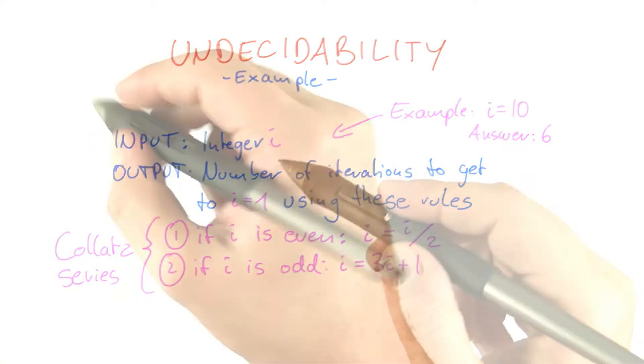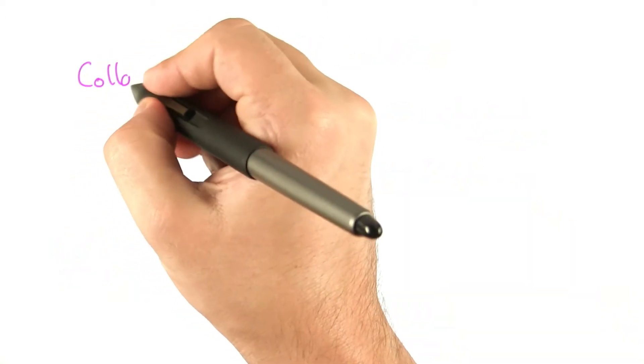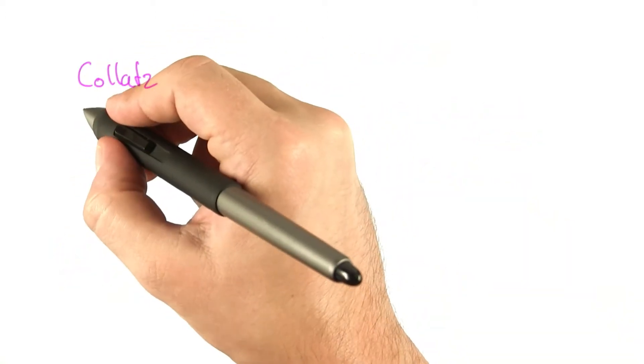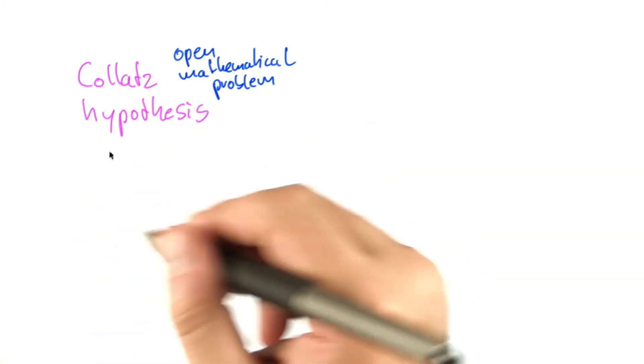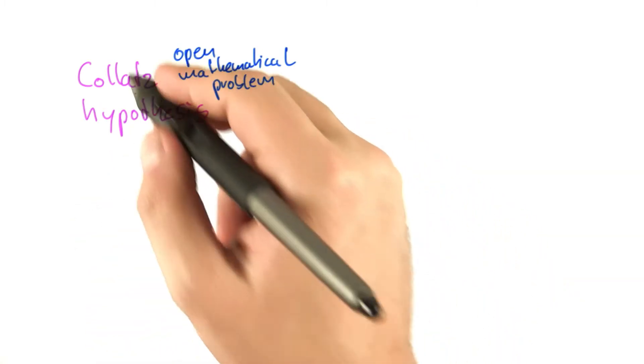The only thing we can do is run it. So the Collatz problem, or Collatz hypothesis, is an open mathematical problem. And of course, as you know, it's not the only open mathematical problem, so we could have other mathematical problems as well.